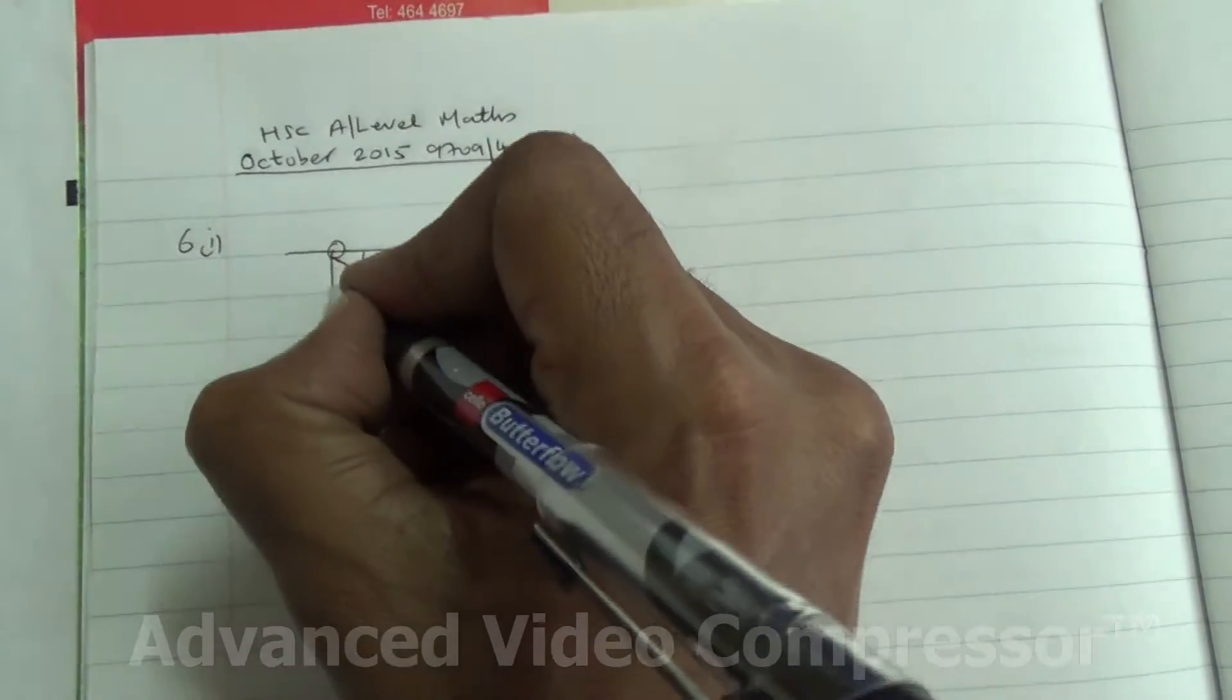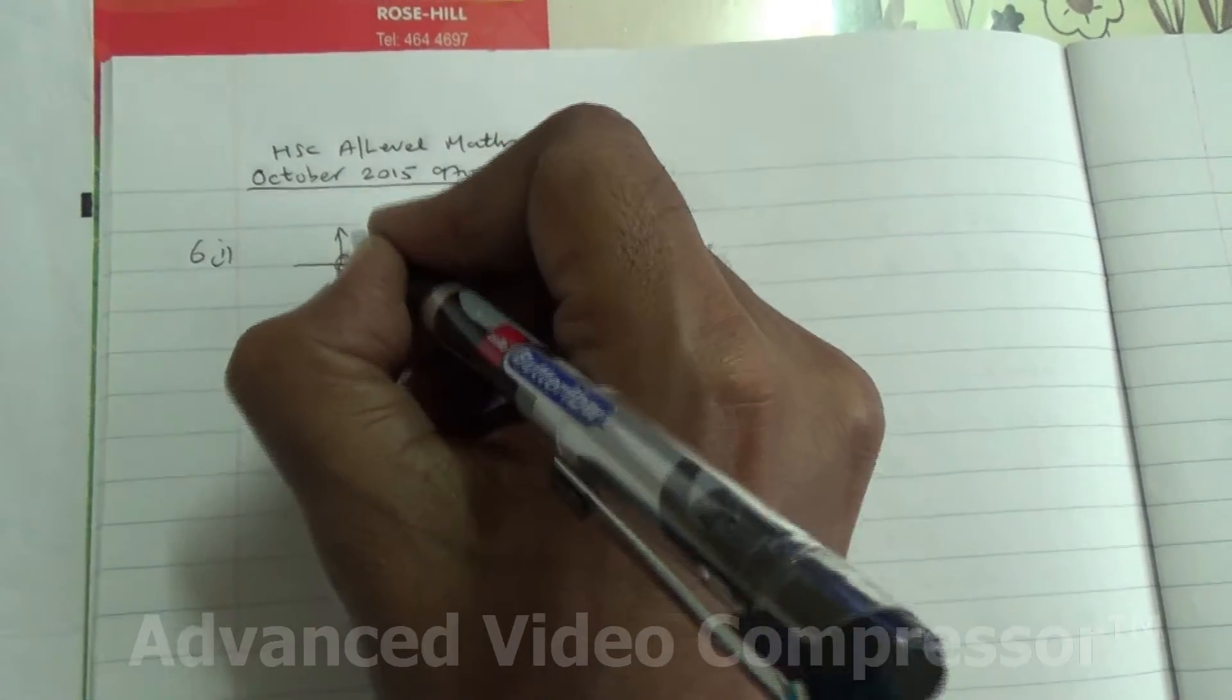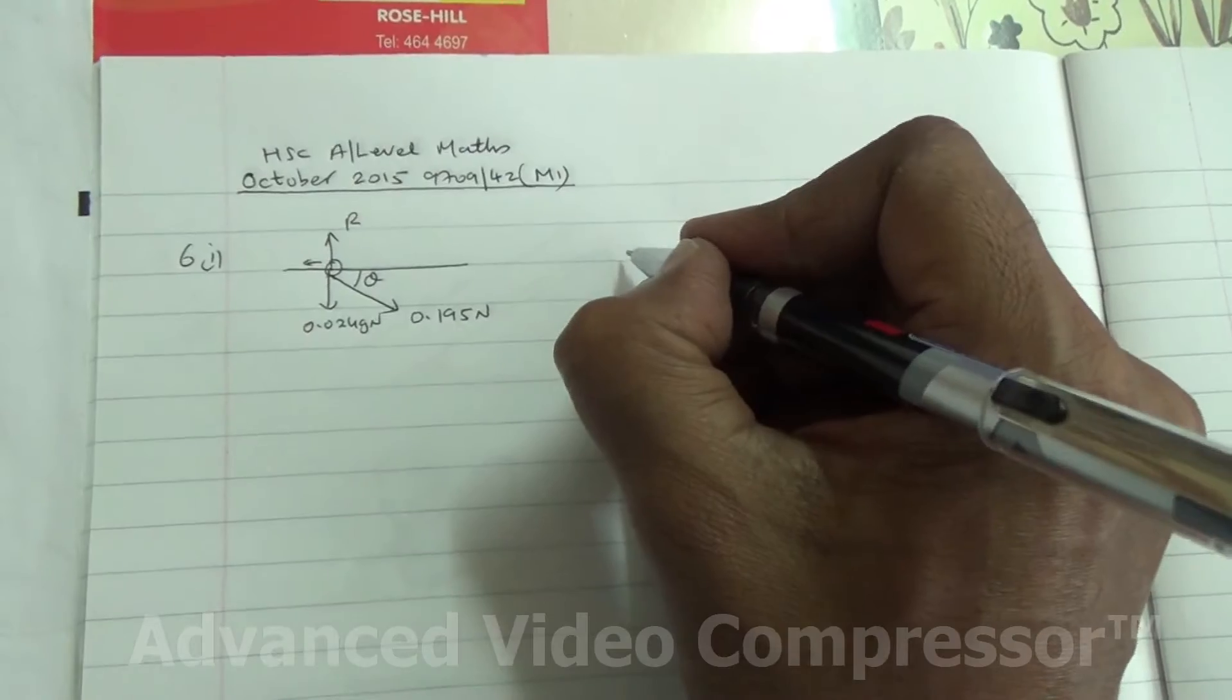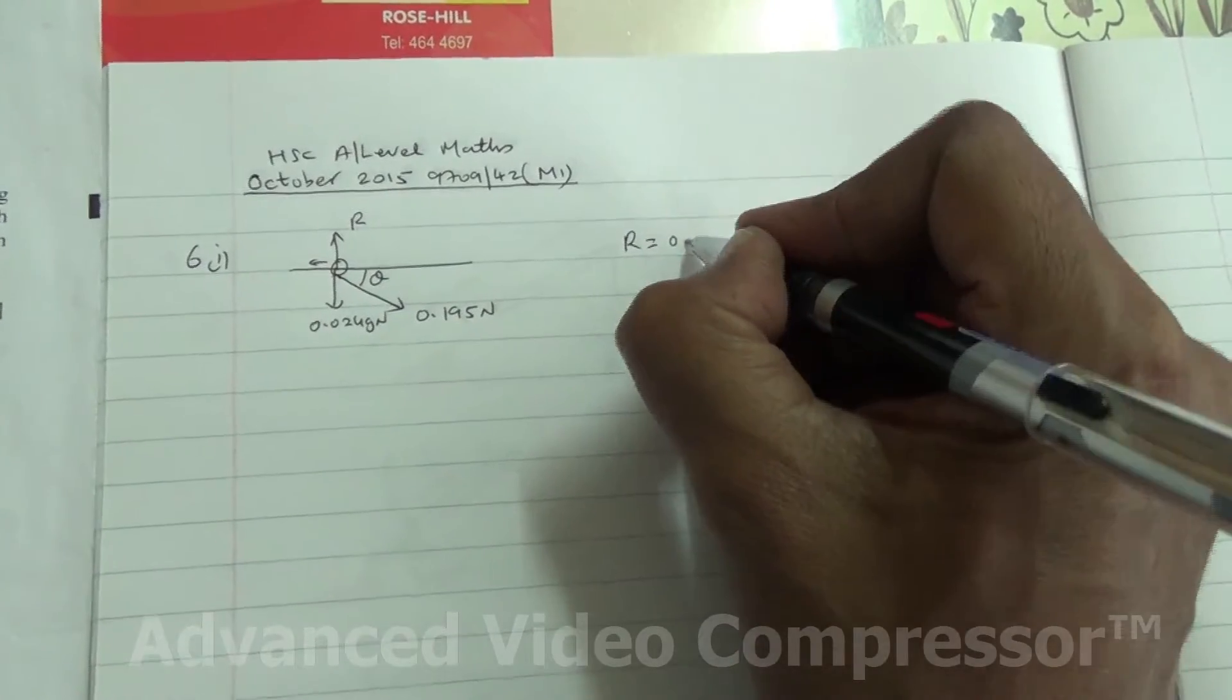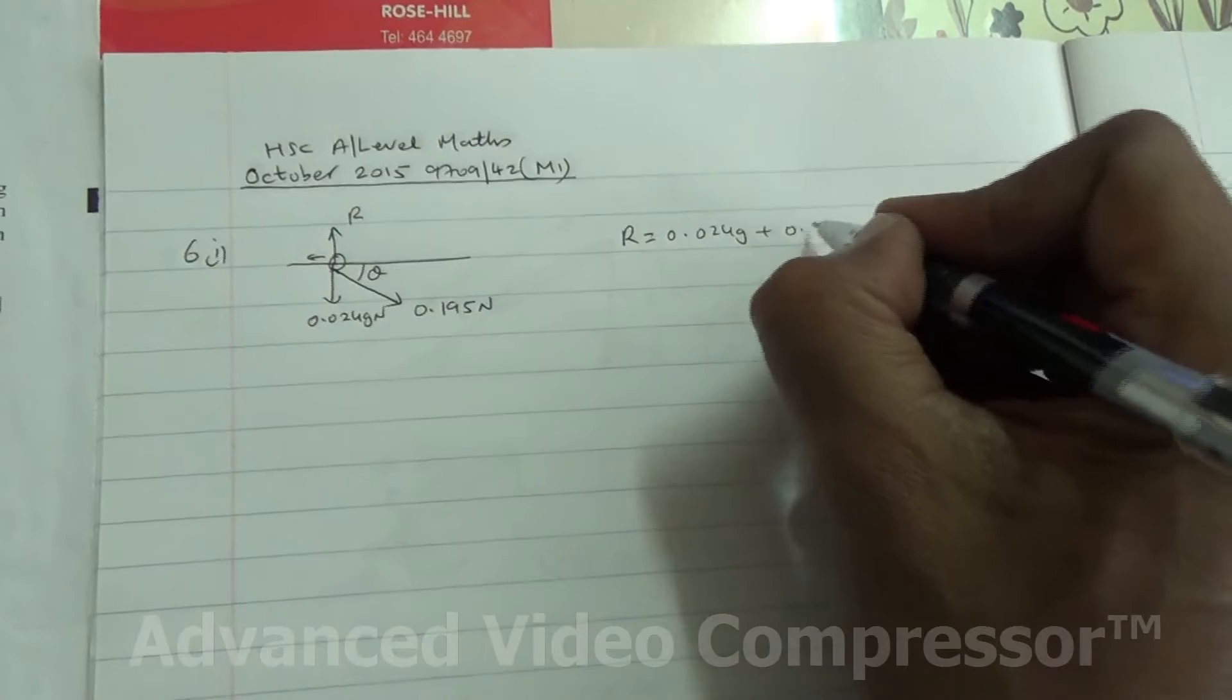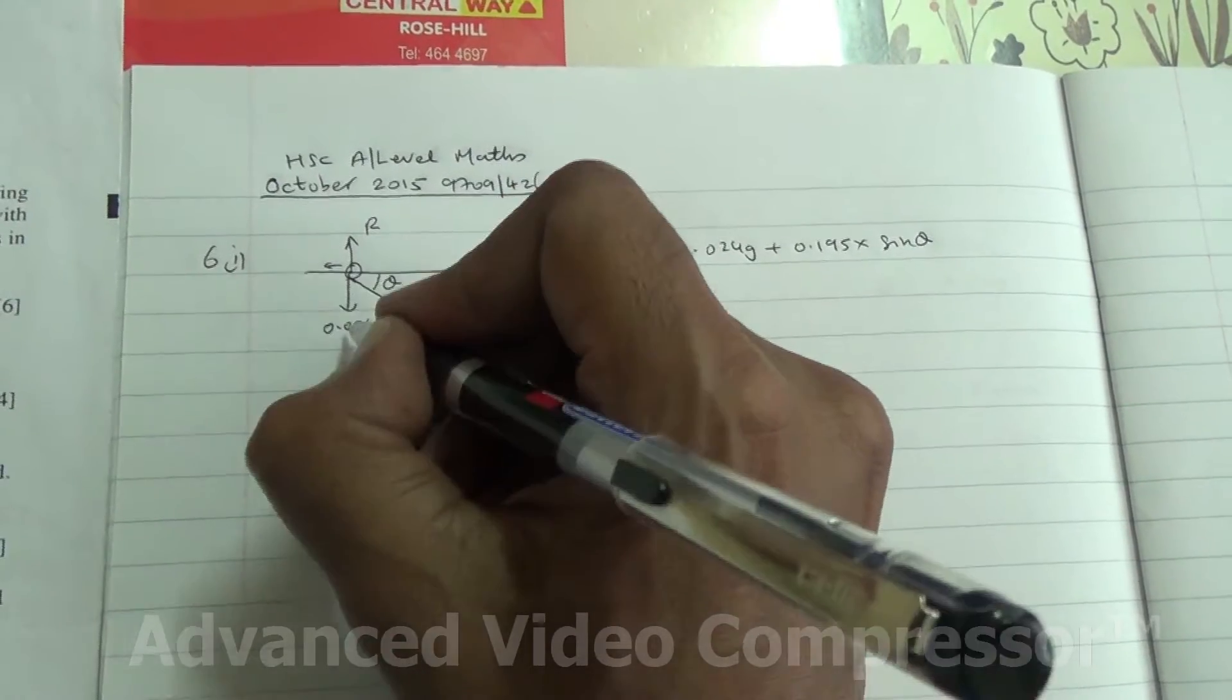Okay, this is what we have. Now remember the weight of the object is 0.024 g newton. We have a contact force, so I'm happy to resolve vertically. So R minus these two forces down is going to be R equal to 0.024 g plus 0.195 times the sine of theta because it doesn't contain the angle moving downward.